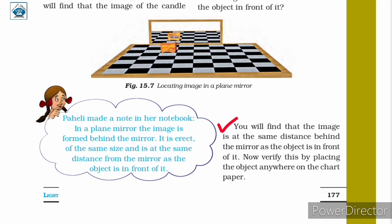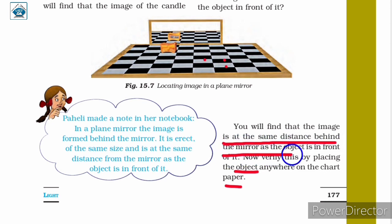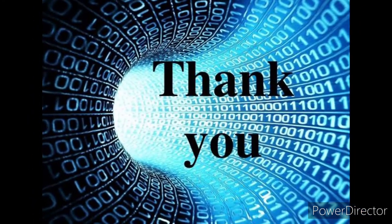Just as we discussed, the image is at the same distance behind the mirror as the object. You can verify this by placing the pencil sharpener anywhere on the chart paper — the image will always be at the same distance behind the mirror as the object is in front of it. So, it is completely right. Thank you.